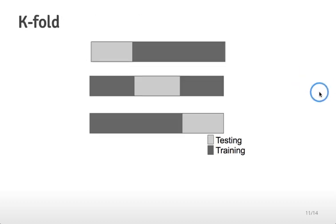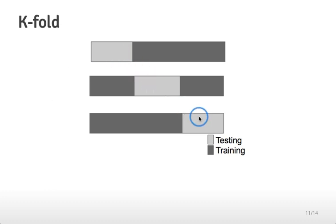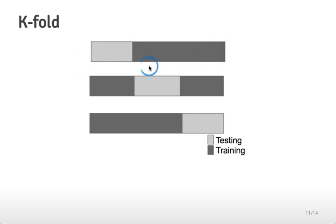Another approach is k-fold cross-validation. You take all your samples and divide them into k equal chunks. For three-fold cross-validation, you take the first third as the test set and train on the remaining two thirds, then take the middle third as the test set, then the last third. Each chunk serves as the test set once while the model is built on the other folds. For ten-fold cross-validation, you break the samples into ten chunks and call each chunk the testing set while training on the other nine-tenths of the data.